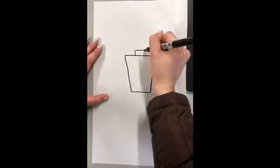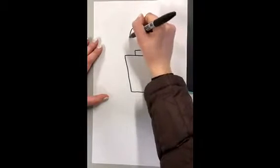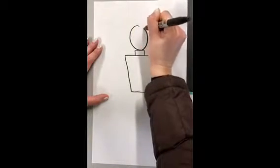Next you will add a small rectangle right in the middle of the top of the body and an oval for the head.